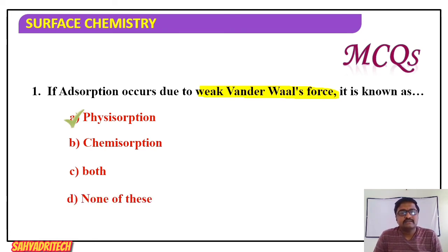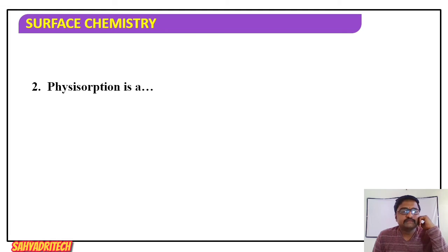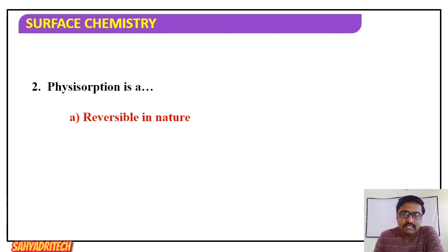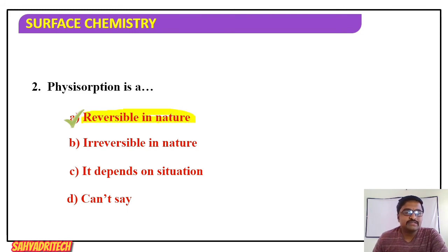Second MCQ: physisorption is — options: A) reversible in nature, B) irreversible in nature, C) depends on situation, D) none. Physisorption is reversible in nature. The characteristics of physisorption include: weak van der Waals forces of attraction, reversible in nature, low activation energy, multi-layer process, and not specific in nature. So the answer is reversible in nature, option A.